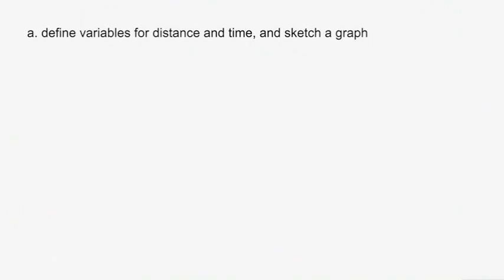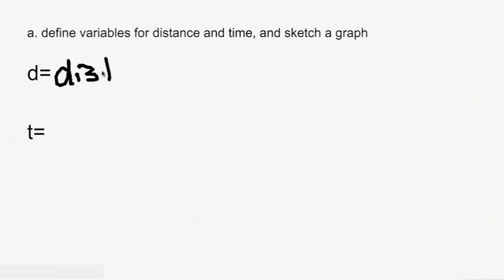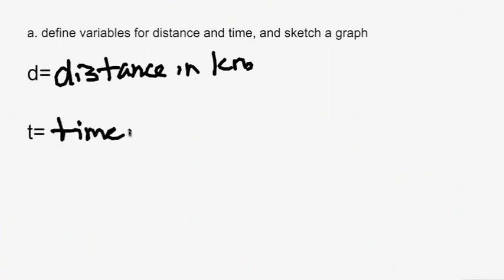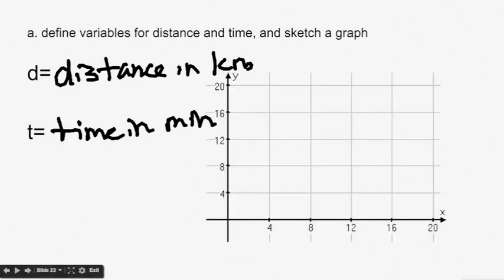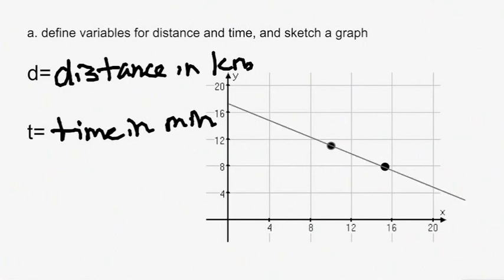Part A asks you to define the variables for distance and time and sketch a graph. D will be our distance in kilometers, and T will be our time in minutes. To graph, we draw our axes and plot the two points (10, 11) and (15, 8), then draw the line through them.